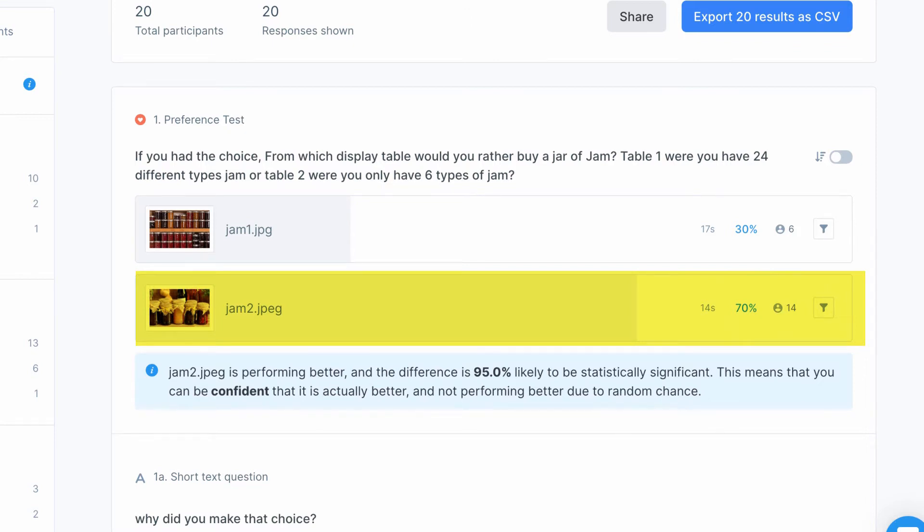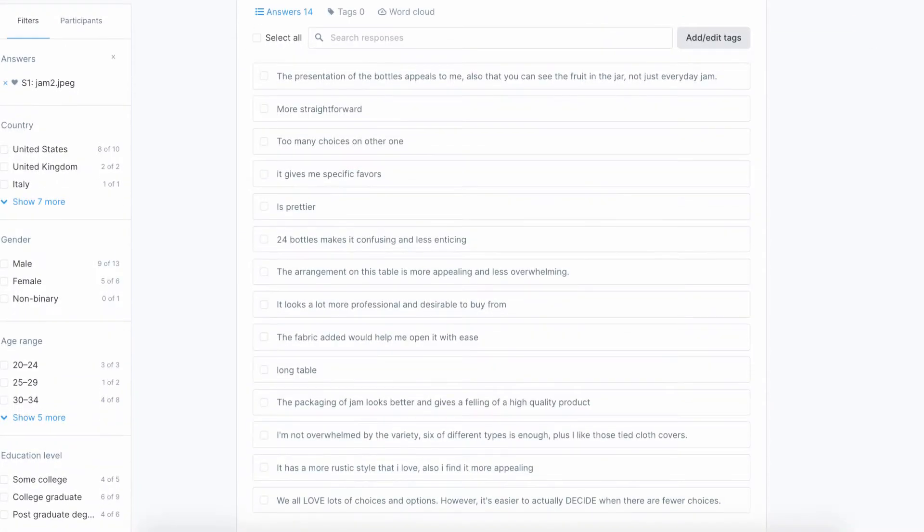And I want you to look at their answers: more straightforward, too many choices on the other one, I'm not overwhelmed by the amount of variety, six types is enough. Now this is my favorite one: we all love lots of choices and options, however it's easier to actually decide when there are fewer choices. Now I promise you this person did not get paid to write this. So basically, 21 years later, that jam study still makes sense.